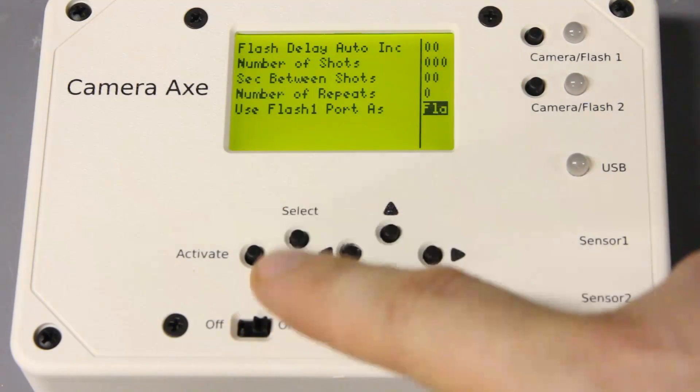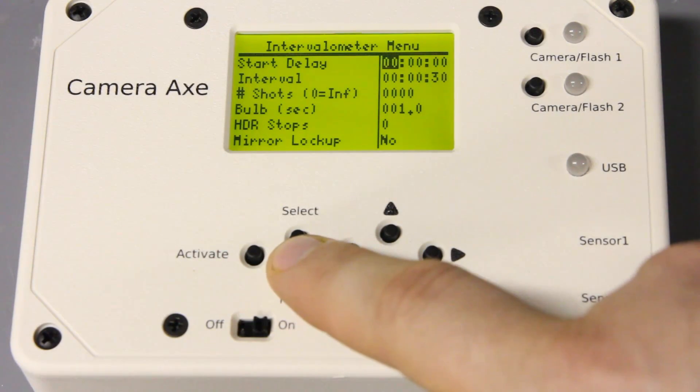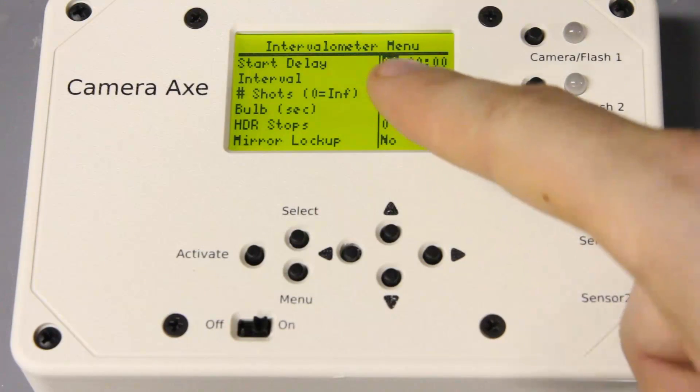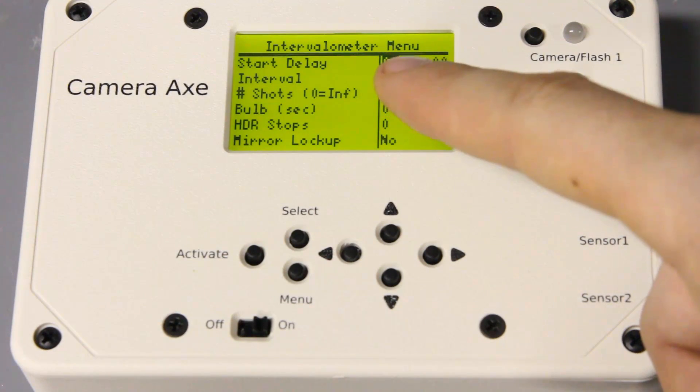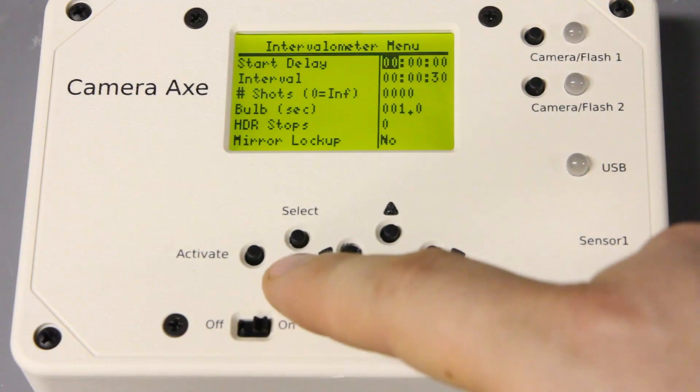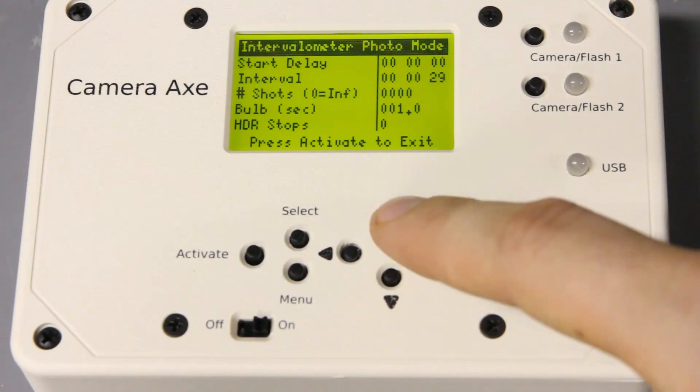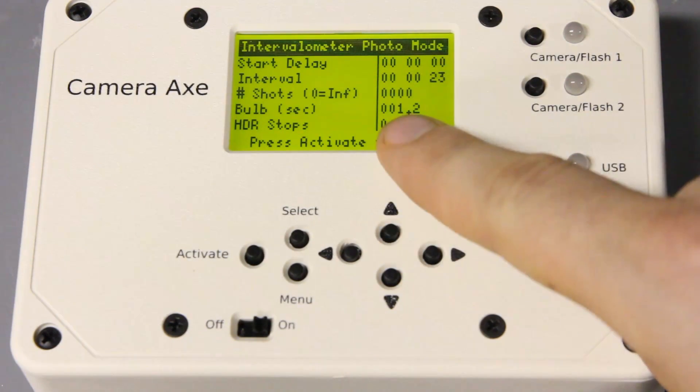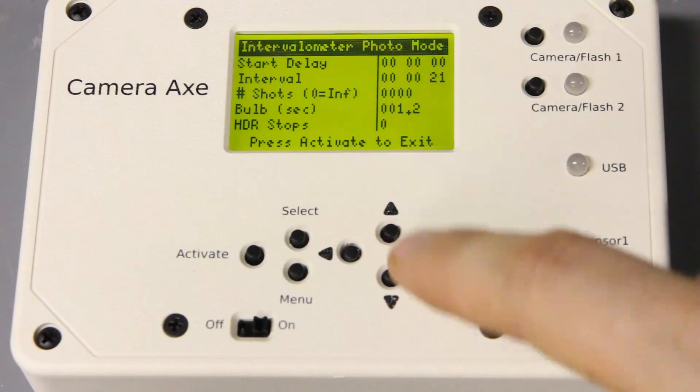Next up on the list is on the intervalometer. You can now, after activating it, the up and down arrows affect the bulb setting.